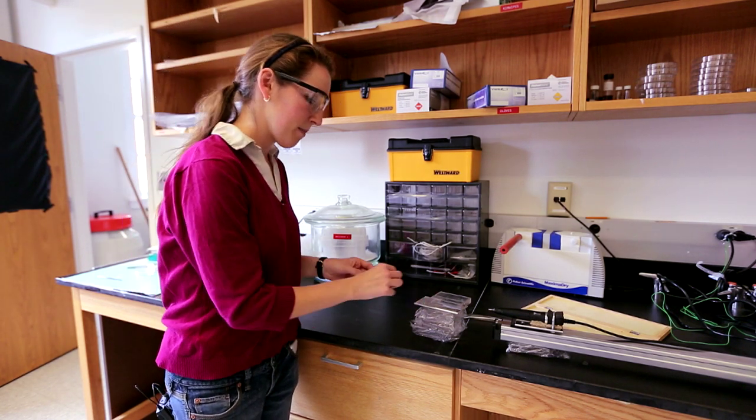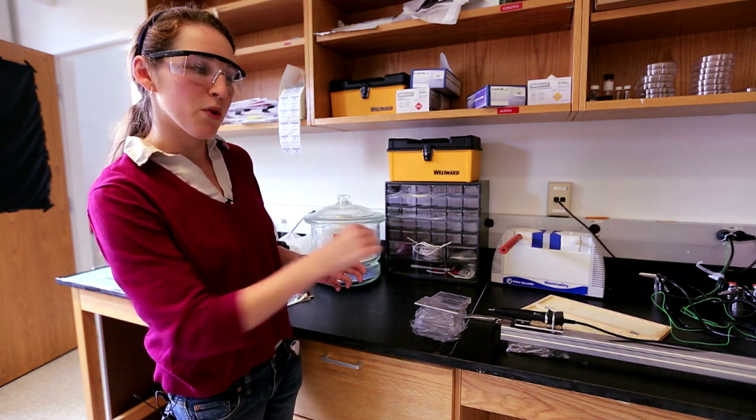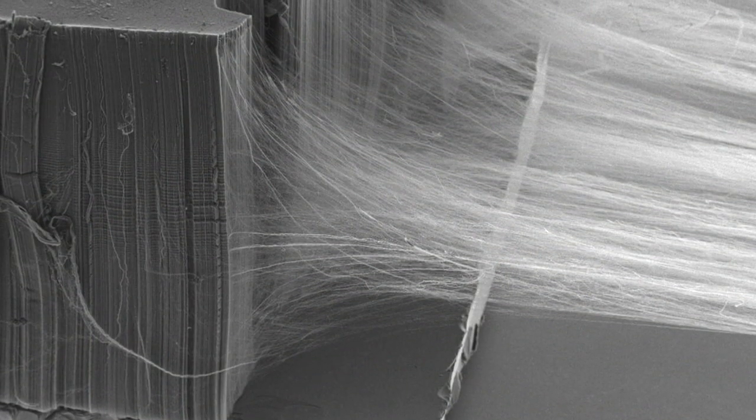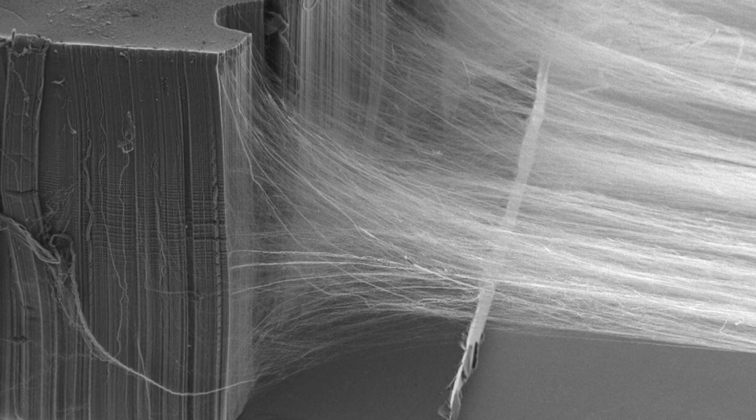When we actually pull on the tip of one of these carbon nanotube bundles, we can pull out a web. And it almost looks like a spider web. And as we twist that web, we can spin it, much like you would spin yarn or something.